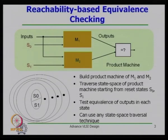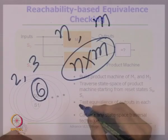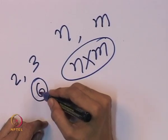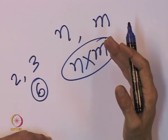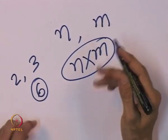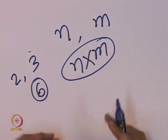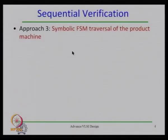We are constructing a product machine. If one machine has N states and another has M states, the product machine will have M×N states. Say one has 2 and another has 3, giving 6 combinations of states. Based on state transitions, some combinations are legal and some are illegal — if we end up at an illegal combination, those two machines are not equivalent. We use symbolic FSM traversal of the product machine to figure out whether we reach an illegal state.